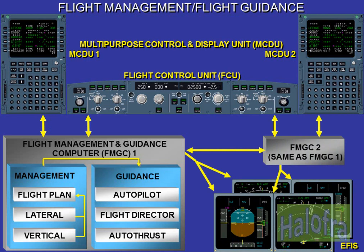The Flight Management, FM, part has several functions linked to the flight plan, such as lateral and vertical guidance associated with performance computation. The Flight Guidance, FG, part has three functions: autopilot, flight director, and autothrust. The FMGC functions — flight management and flight guidance — are controlled from the Multipurpose Control and Display Units, MCDUs, and the Flight Control Unit, FCU.